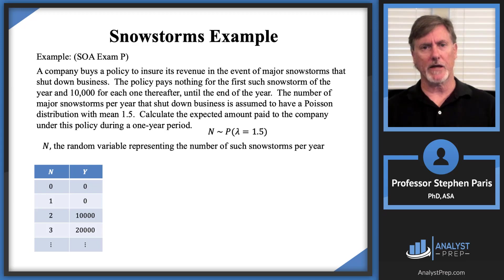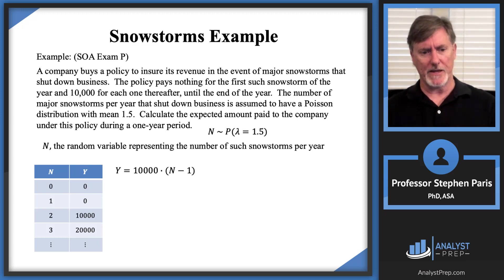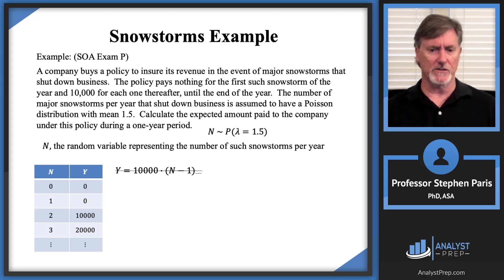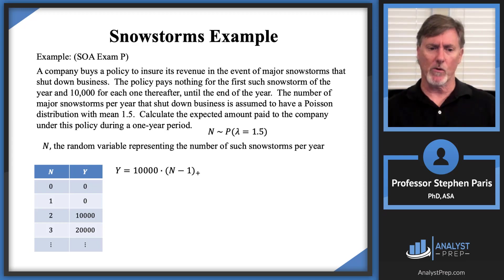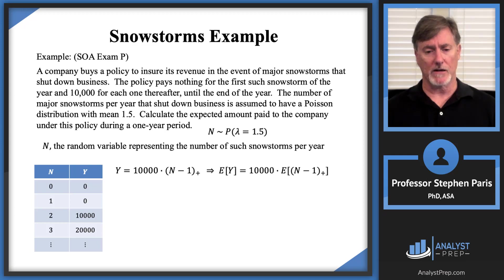It may appear that Y equals 10,000 times (N minus 1), but that's not correct — if N is zero, that formula gives a negative value. Using the notation from the policy modifications learning video, we can write Y as 10,000 times (N − 1)+, where the plus subscript means we zero out any negative values. So E[Y] equals 10,000 times E[(N − 1)+].